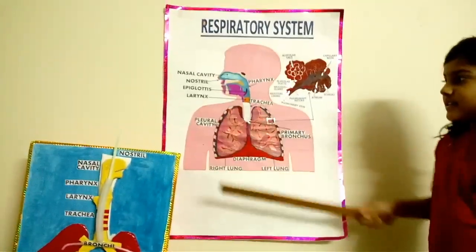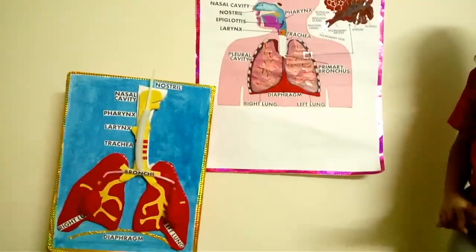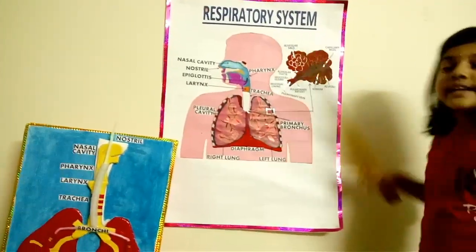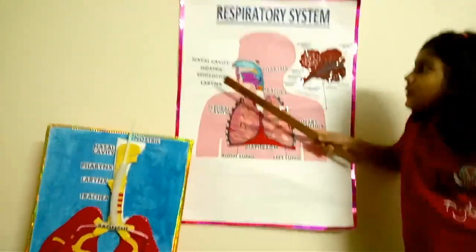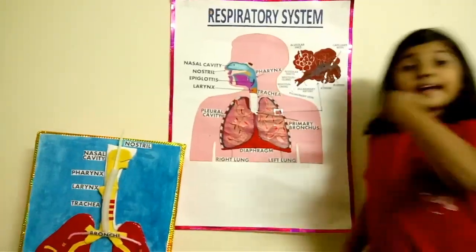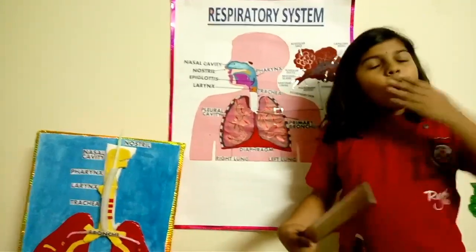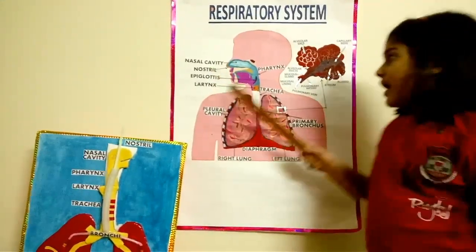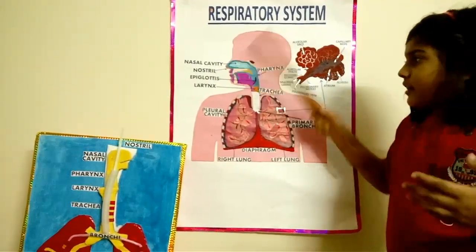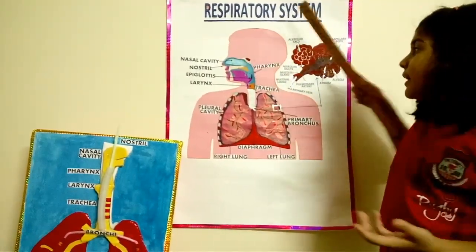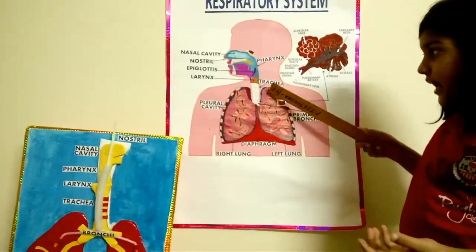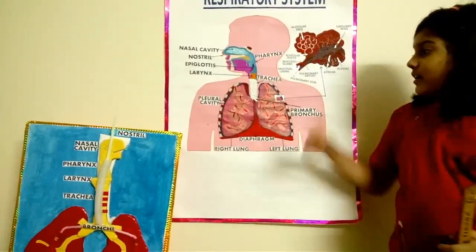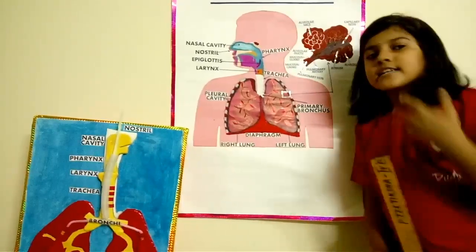This is the respiratory system model and chart. The respiratory system is the set of organs that allows a person to breathe and exchange carbon dioxide and oxygen. The parts of the respiratory system are nasal passages, meaning the nostril and nasal cavity, pharynx, larynx, trachea, and lungs. The main organs of the respiratory system are the lungs.